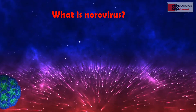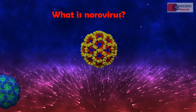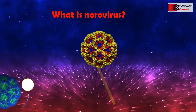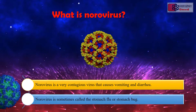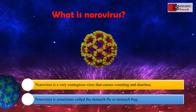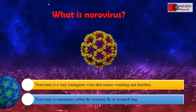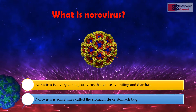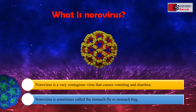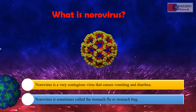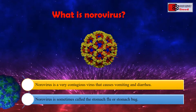What is norovirus? According to the Centers for Disease Control and Prevention, norovirus is a very contagious virus that causes vomiting and diarrhoea. Norovirus is sometimes called the stomach flu or stomach bug. However, norovirus illness is not related to the flu, which is caused by the influenza virus. People with norovirus illness can shed billions of virus particles, and only a few of them can make other people sick.